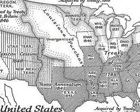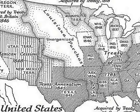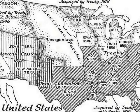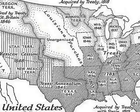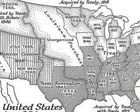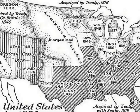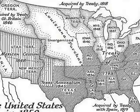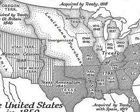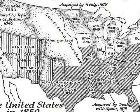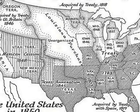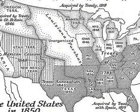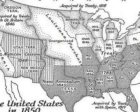During the 1850s, there was a constant deliberation over which states and territories would be admitted as either a free state or a slave state. This created issues because if the North had more states or the South had more states, they would have more power in Congress.